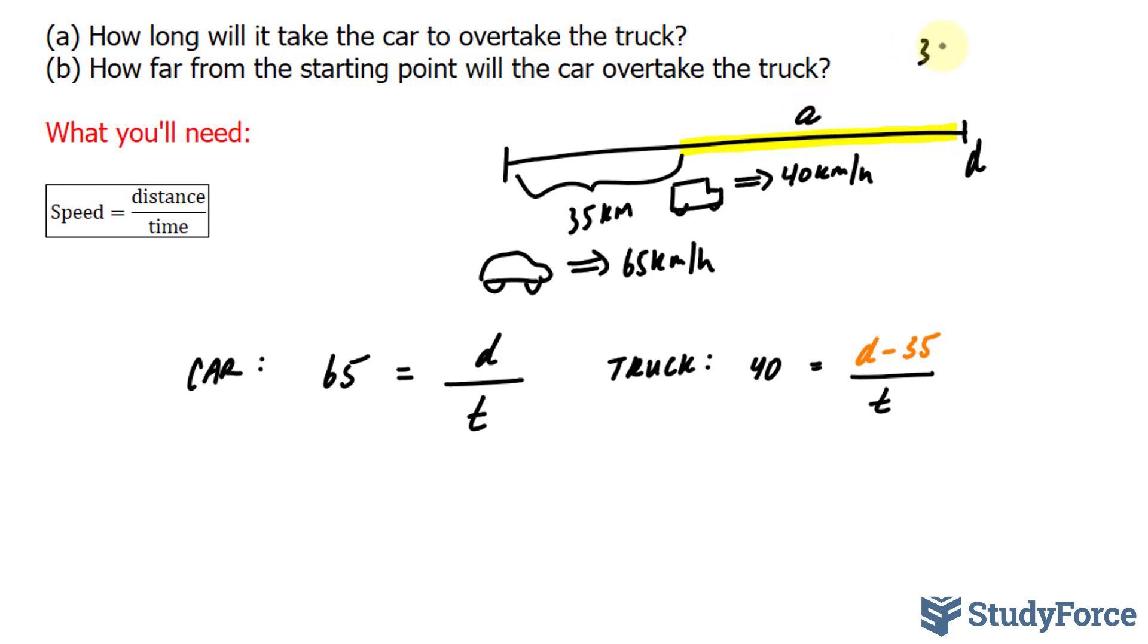So 35 plus A is equal to D. If I isolate for A, I have to bring this 35 over, where I end up with A is equal to D minus 35. And that's where that comes from.